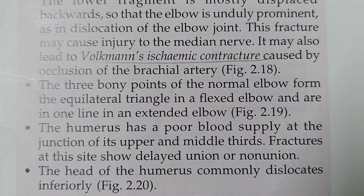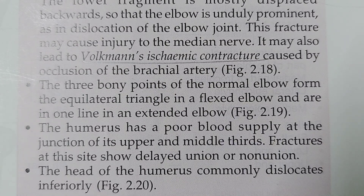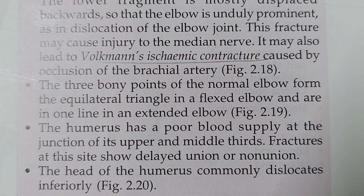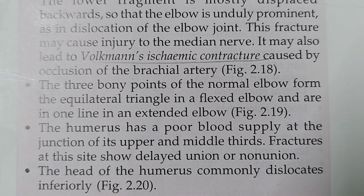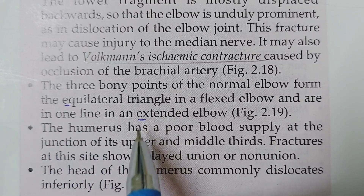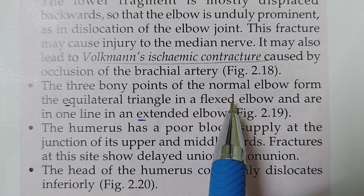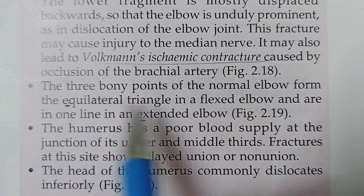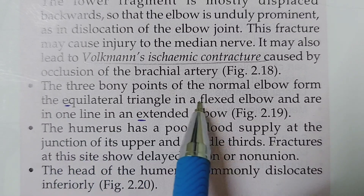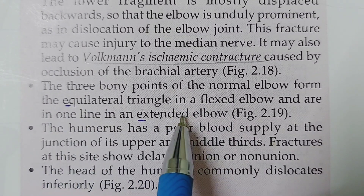The three bony points of the normal elbow form an equilateral triangle in a flexed elbow, and are in one line in an extended elbow. To remember this: when the elbow is flexed, it forms an equilateral triangle; when extended, it becomes one straight line. The memory trick is — after E comes F — so Equilateral triangle with Flexed elbow, and one line with Extended elbow.